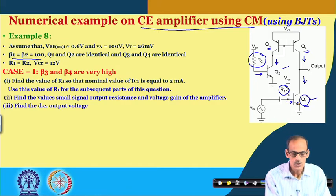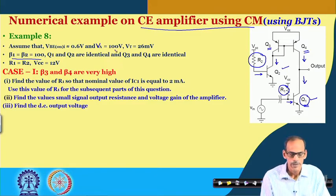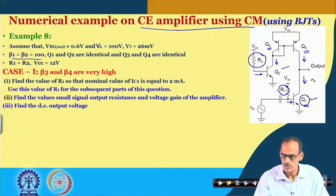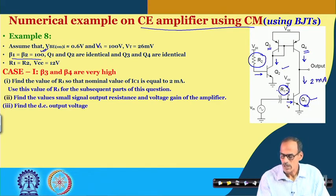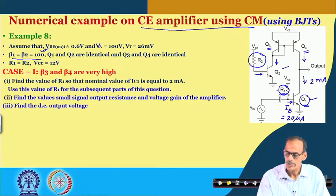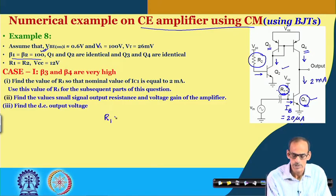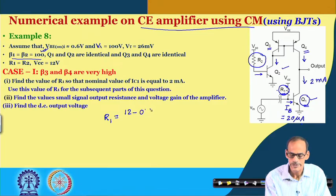We also have the information that all devices have an early voltage of 100 volts. With this information, let us find the value of this resistance to get collector current IC1 equal to 2 milliamperes. Since beta is 100, the base current IB should be equal to 20 microamperes. So, to get R1 for 20 microamperes: R1 = (VCC − VBE) / IB = (12V − 0.6V) / 20µA.